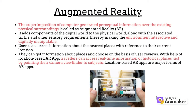A great example of Augmented Reality is Pokémon Go. The superimposition of computer-generated perceptual information over the existing physical surroundings is called Augmented Reality or AR. It adds components of the digital world to the physical world along with the associated tactile and other sensory requirements, thereby making the environment interactive and digitally manipulatable. Users can access information about the nearest places with reference to their current location and can choose on the basis of user reviews. With the help of location-based AR apps, travelers can access real-time information about historical places just by pointing their camera and viewfinders to the subject. Location-based AR apps are a major form of AR apps.